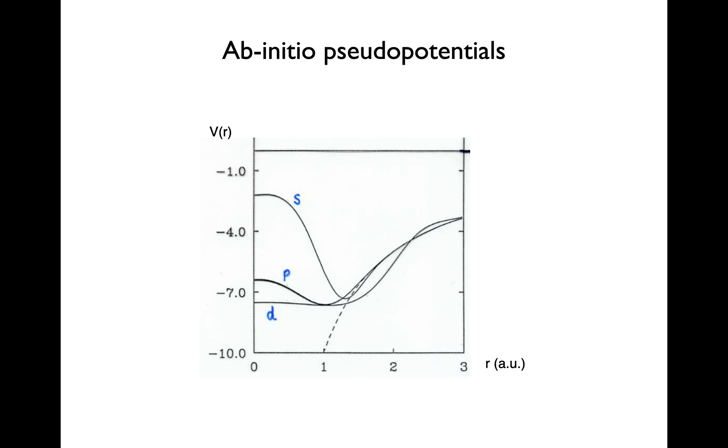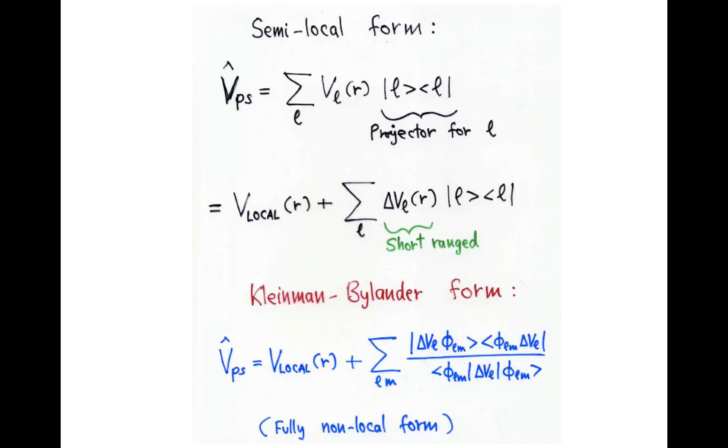So, in the end, what we get out of this procedure is what is called an ab initio pseudopotential. Its main features are that first, when you get away from the core region, it should go into the Coulomb part, the Coulomb form. Also, another interesting feature is that the procedure we have followed for the 3s orbital can be done for other orbitals with different angular momenta. So, in general, you get different radial parts for different angular momenta, in this case s, p and d.